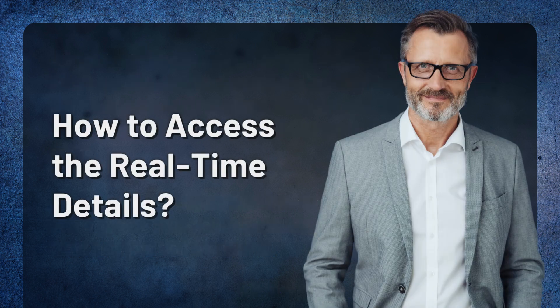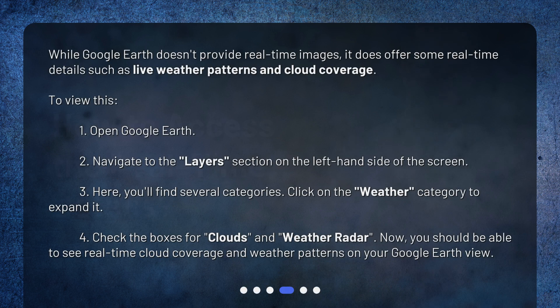How to access the real-time details? While Google Earth doesn't provide real-time images, it does offer some real-time details such as live weather patterns and cloud coverage. To view this: 1. Open Google Earth. 2. Navigate to the Layers section on the left-hand side of the screen. 3. Here, you'll find several categories. Click on the Weather category to expand it. 4. Check the boxes for Clouds and Weather Radar. Now, you should be able to see real-time cloud coverage and weather patterns on your Google Earth view.